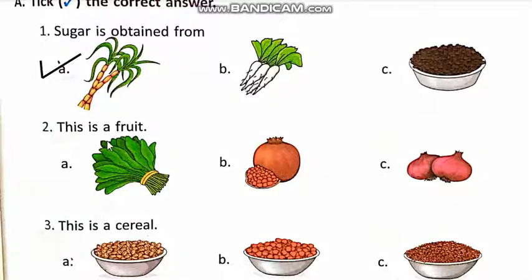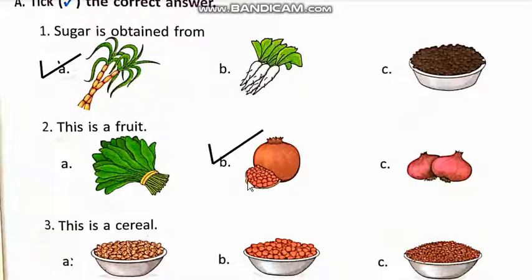Number two: This is a fruit. Option A: Spinach. B: Pomegranate. C: Onion. The answer is B. We write tick on B — Pomegranate. A, Spinach, and C, Onion, are vegetables.